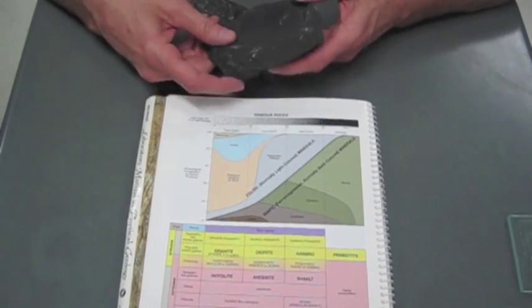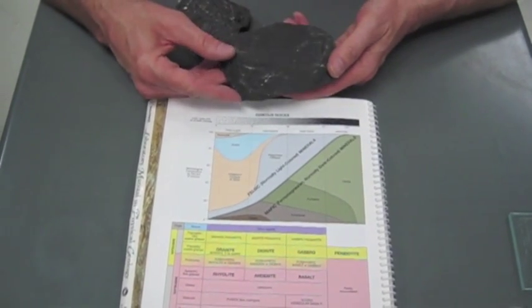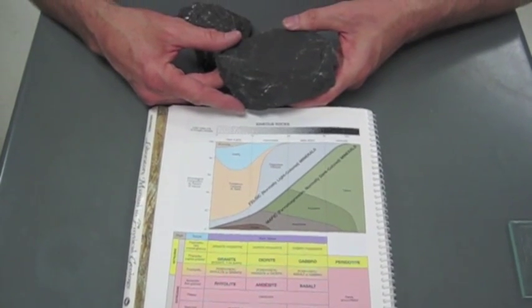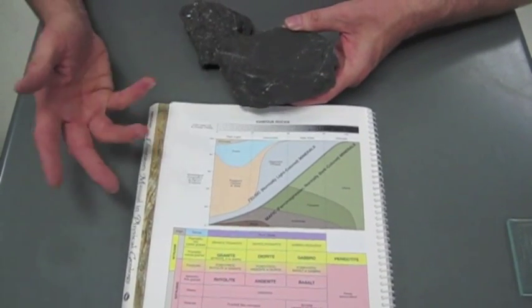But it's fine-grained, I can't see anything in here. Sometimes you'll see gas bubbles, they might even be filled with calcite or quartz, depending on where the rock's been.